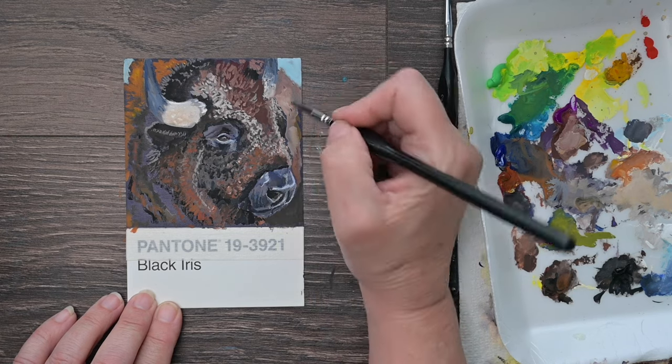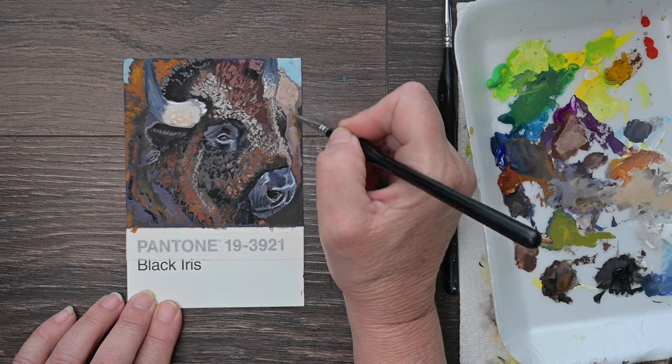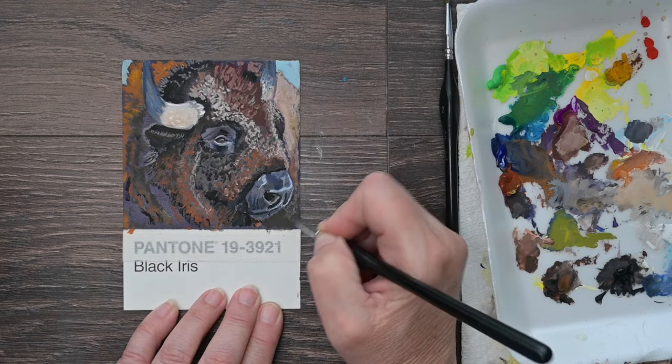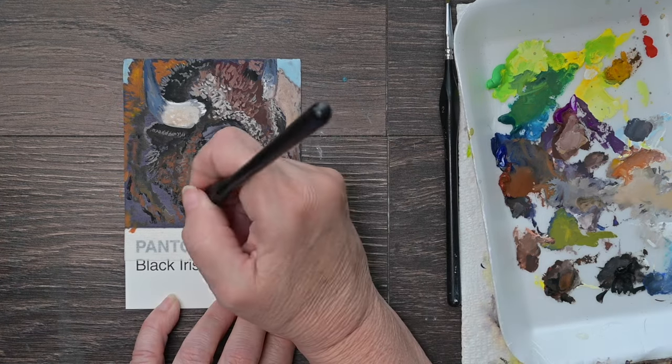And because he has highlights in the actual reference photo. I'm going ahead and I'm lightening up his back hip there. That's actually his haunch that I'm painting from the way he's curved around.